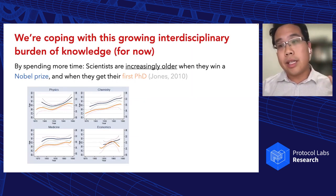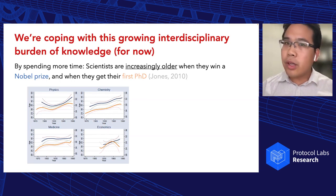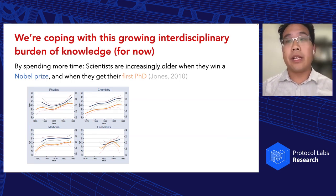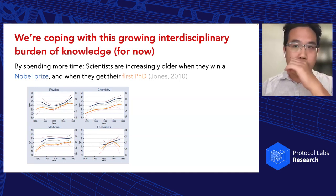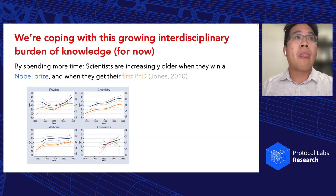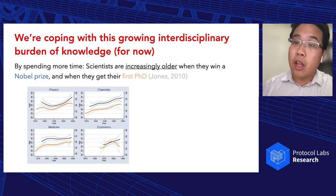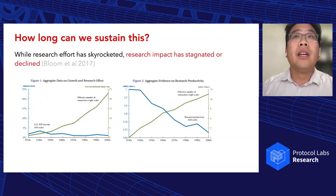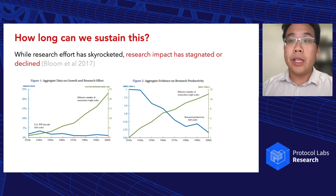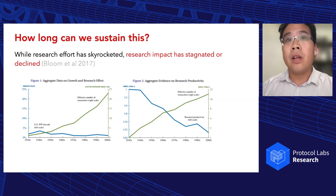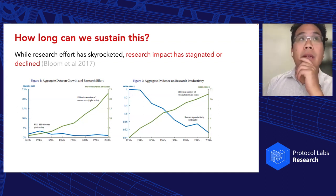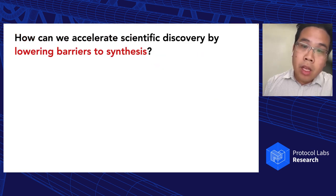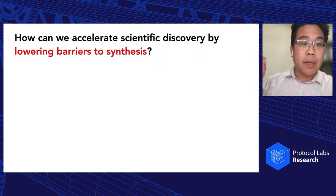I see connections here to an underappreciated potential mechanism for what people are perceiving as a slowdown in scientific productivity and progress. It's getting harder and harder to win a Nobel Prize. We're doing more of our high-impact science in teams, which brings its own challenges in overhead. We have somewhat controversial but concrete observations of some slowdowns in the impact of research. So the core question is how to accelerate scientific discovery by lowering barriers to synthesis.